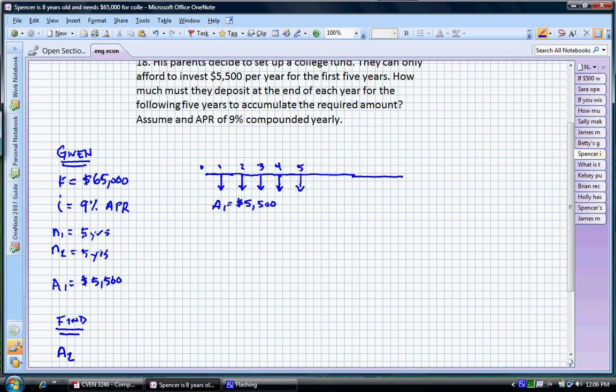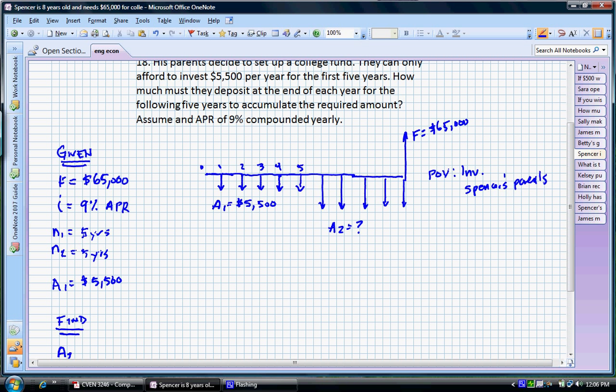From then on out for the next five years we need to make a different series of payments. And I'm going to draw the arrows a little bit longer here because the problem implies that we're going to have to invest a little bit more. But that might not be the case. We really just need to show that we have a different series here. And we're going to solve for what that value is. Now remember our future value F needs to be $65,000. The point of view here is the investor which is Spencer's parents.